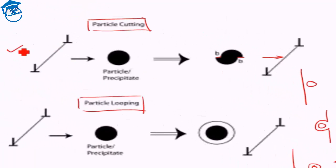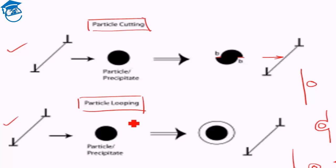These two mechanisms — particle cutting and particle looping — apply to precipitation strengthening. For dispersion strengthening, it is mainly particle looping that takes place. We will revisit precipitation hardening in a few lectures from now, but this was the basic idea behind both precipitation and dispersion strengthening.